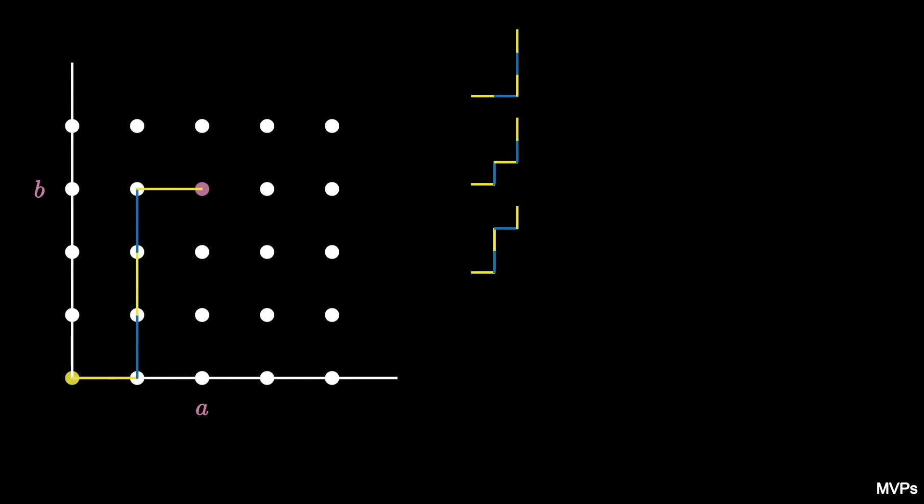As we build all the paths, we realize that each path has the same number of steps, namely a plus b. Moreover, we see that each path has exactly a steps to the right and b steps up, so we only need to keep track of where and when the right steps occur.